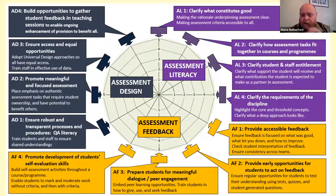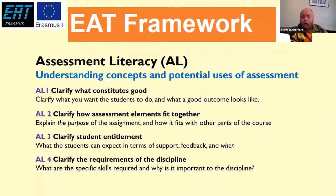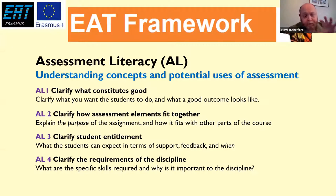The idea we're trying to get across is they're all interrelated. So the one you can see in the top right — what constitutes a good outcome to an assessment from the student — that links to ideas such as providing accessible feedback and clarifying what entitlement the student has to support. The first one is assessment literacy: really getting both students and staff to understand what assessment is about, what the parameters of it are, what we want from an assessment, what they can get out of an assessment. The first dimension is clarifying what counts as a good outcome.